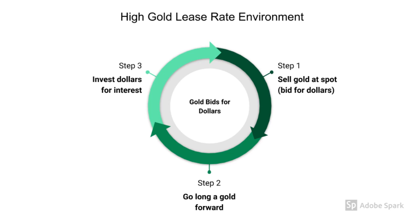Here's a simple diagram explaining the steps of lending gold to generate a rate of return. It starts with the gold owner selling the gold at current spot price to obtain dollars — essentially gold bidding for dollars. Step two is to enter into a contract for the return of gold; technically this contract doesn't need to be with the same person who bought the gold, but it can be. These two steps are referred to as lending gold. The third step is to lend the dollars at interest.